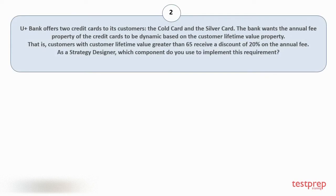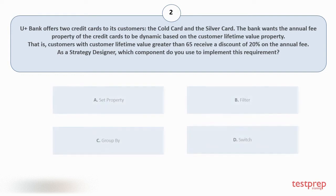Question number two: UPlus Bank offers two credit cards — the Gold Card and the Silver Card. The bank wants the annual fee property of the credit cards to be dynamic based on the customer lifetime value property. Customers with customer lifetime value greater than 65 receive a discount of 20% on the annual fee. As a strategy designer, which component do you use to implement this requirement? Your options are: A) Set Property; B) Filter; C) Group By; D) Switch. The correct answer is option B.